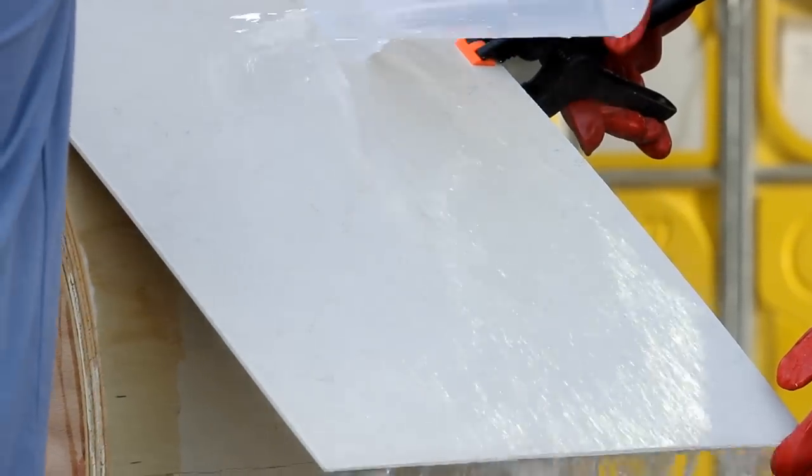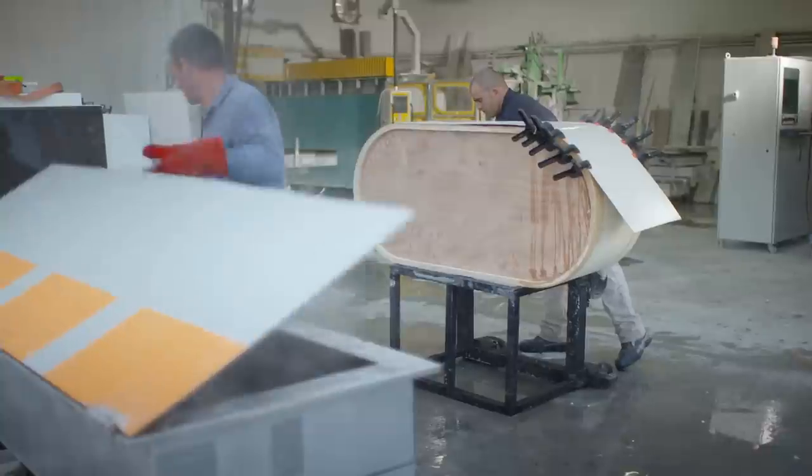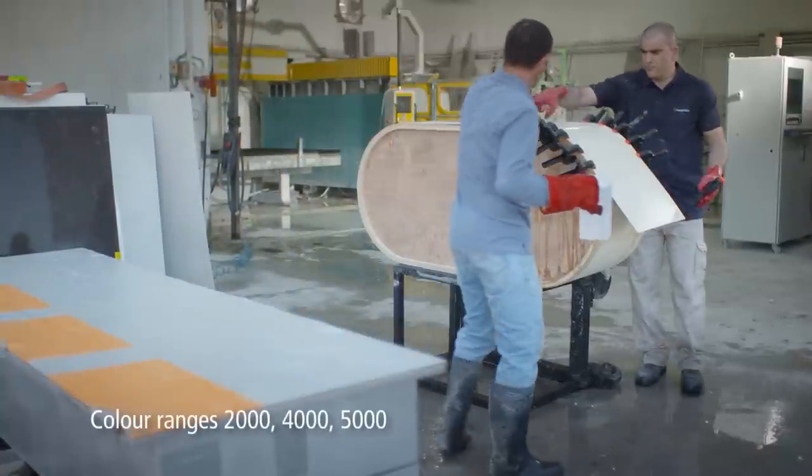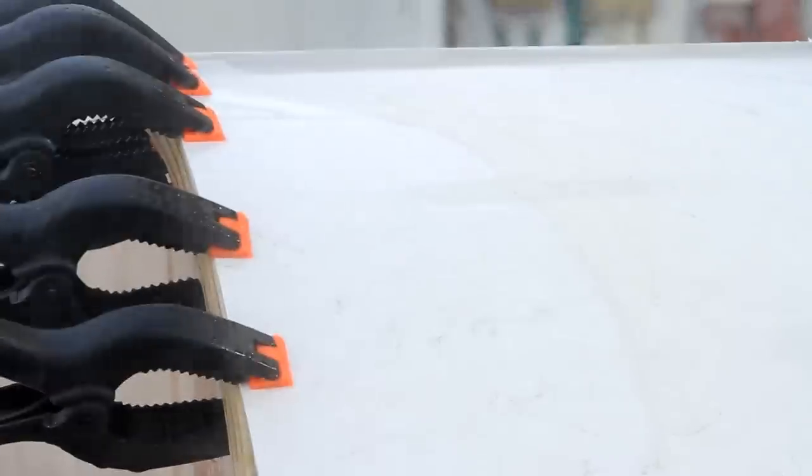Some Caesarstone colors are more suitable for thermoforming than others. These are the 2,000, 4,000, and 5,000 ranges.